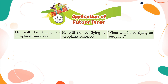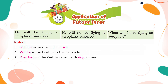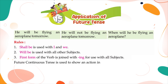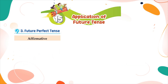When will he be flying an aeroplane? Rules: shall be is used with I and we; will be is used with all other subjects. The first form of the verb is joined with -ing for all subjects. Future Continuous Tense is used to show an action in continuity in the time to come.